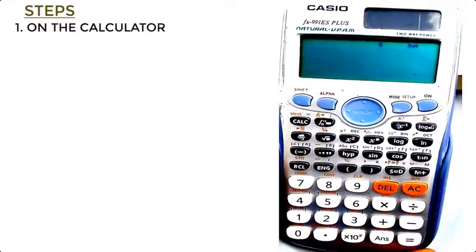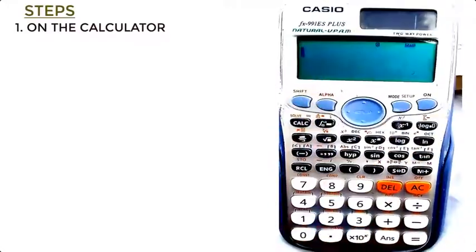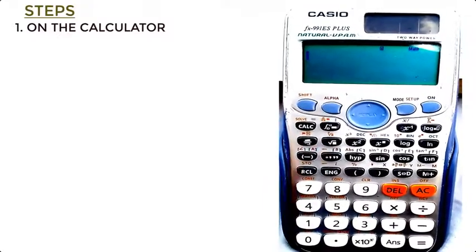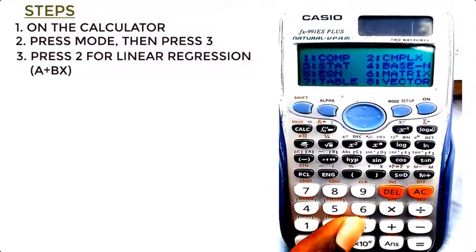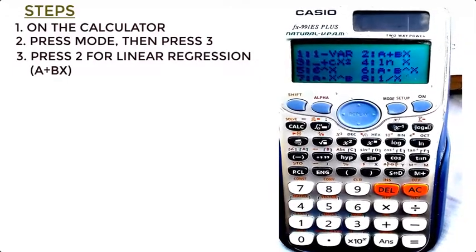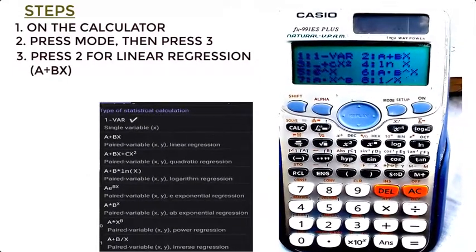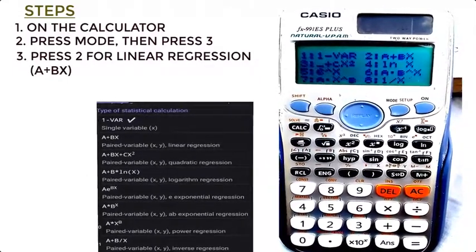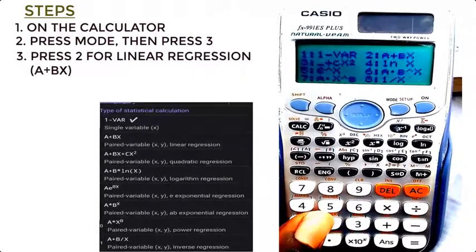The first thing you need to do is to put on your calculator as I have it here. So the calculator is on and then the next thing is to press mode, mode 3. And then I have a lot of options to choose from. Because I want to solve regression analysis, that's linear regression, so I'll press 2.